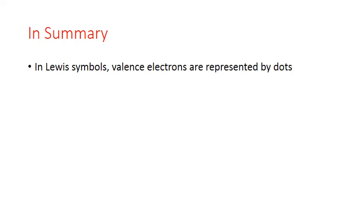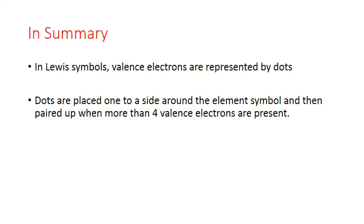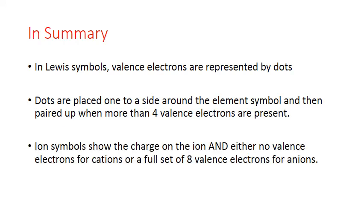In summary, in Lewis symbols, valence electrons are represented by dots. The dots are placed one to a side around the element symbol, and then paired up when more than four valence electrons are present. Ion symbols show the charge on the ion and either no valence electrons for cations, or a full set of eight valence electrons for anions.